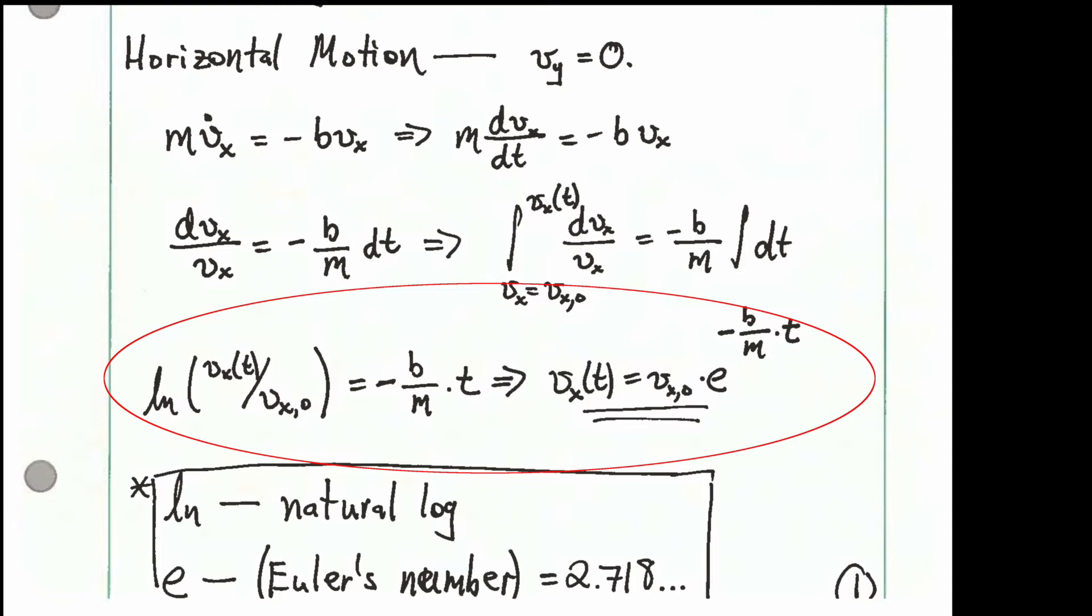On the left-hand side, we have the natural log of the velocity as a function of time, divided by the initial velocity, v sub x comma 0. That's going to be equal to negative b over m times t time. We can rewrite that solution as v of x as a function of time is equal to v0 times the exponent of negative b over m times t.